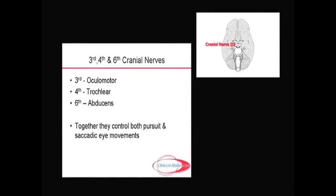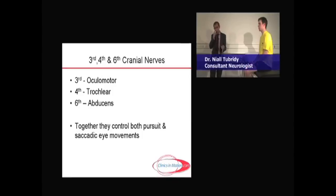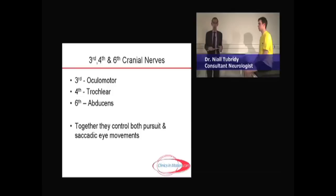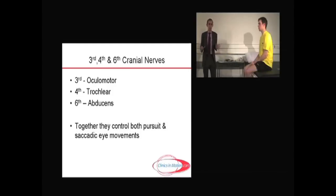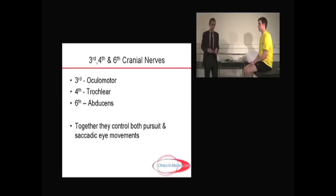The next part of the cranial nerve examination is a combination of the third, fourth, and sixth cranial nerves. The third is the oculomotor, the fourth is the trochlear, and the sixth is the abducens. They're taken together because they determine eye movements — both pursuit and saccadic eye movements — which in essence is how you move your eyes, why you're drawn to certain things, and how you attract your eyes to certain things.